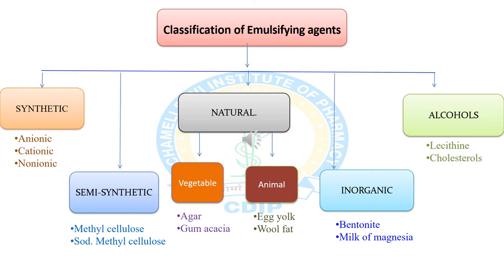The third class is natural emulsifying agents, which are derived from either vegetable or animal sources. From vegetable sources, carbohydrates including gums and mucilages — for example agar and gum acacia — are used. From animal sources, natural emulsifying agents include egg yolk, egg lecithin, and wool fat.